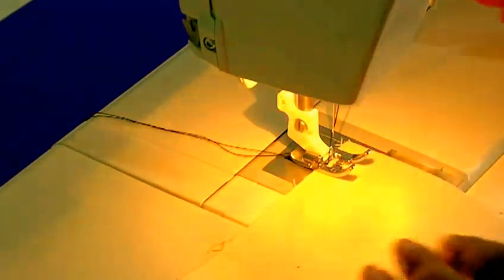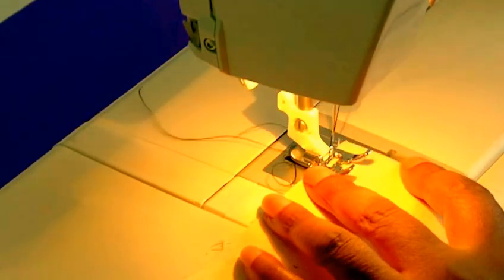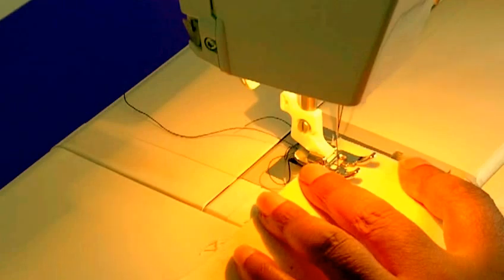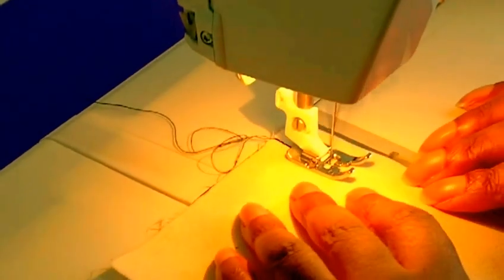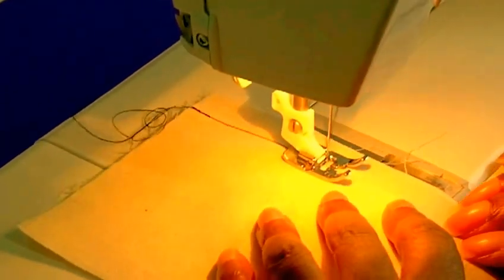Just place your foot down, needle down, and then a couple of stitches forward. Then I press my reverse button to backstitch to secure the stitch. Just sew all the way down, keeping it as straight as possible. Remember you do have a guide on your plate there.